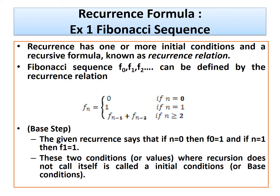The first example of a recurrence relation is the Fibonacci series. Starting with 0 and 1, you take the sum of the two preceding terms to get the next: 0, 1, 1, 2, 3, 5, 8... The next term is always f(n-1) + f(n-2). The base steps are f(0)=0 and f(1)=1. For n≥2, the recurrence relation is: f(n) = f(n-1) + f(n-2).